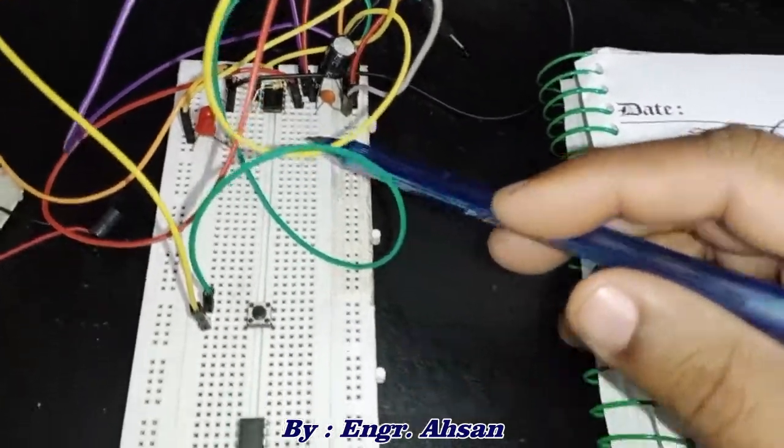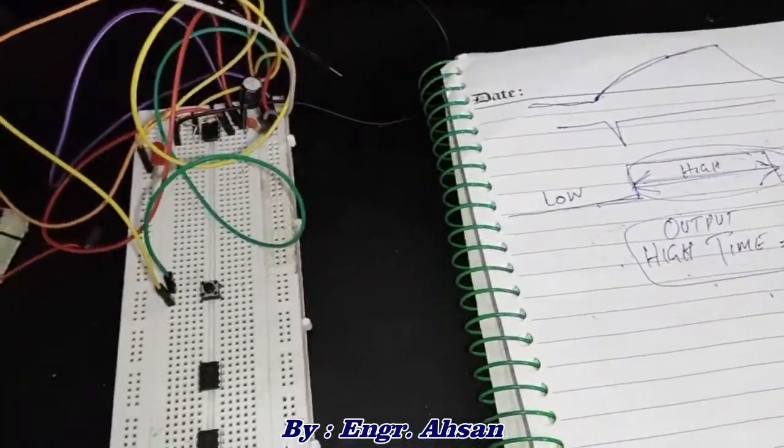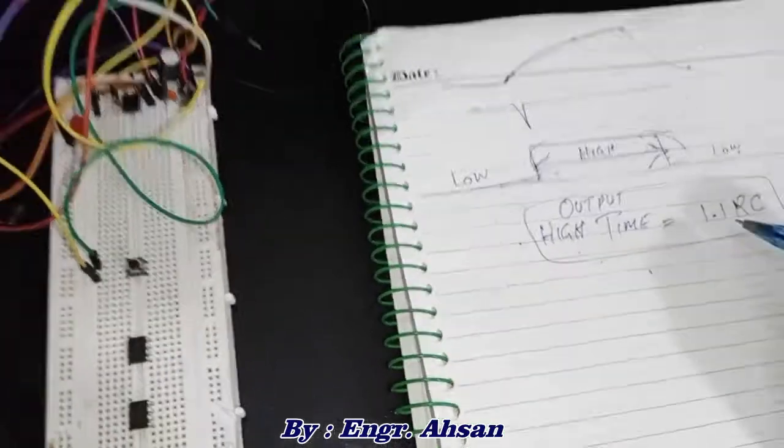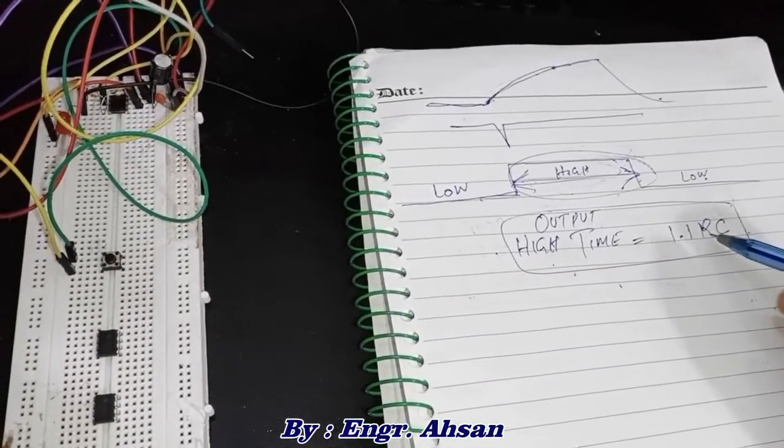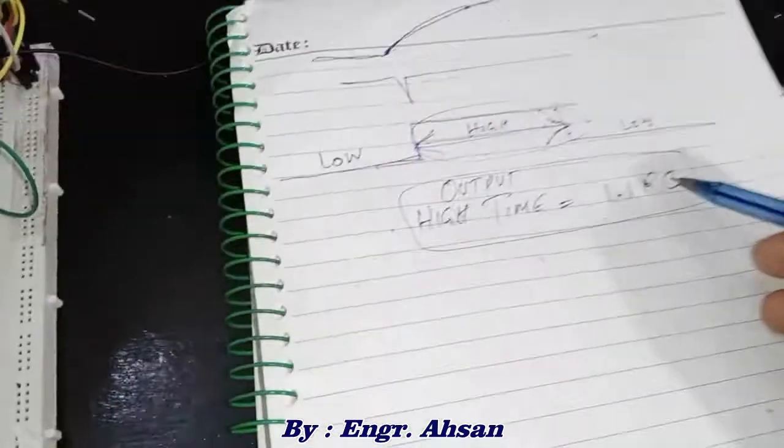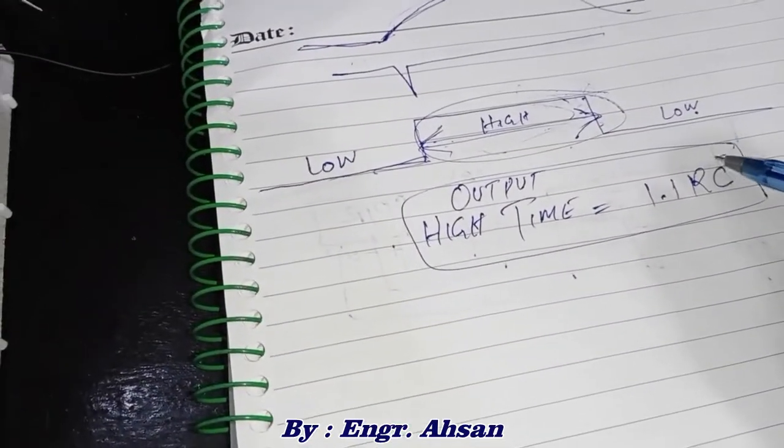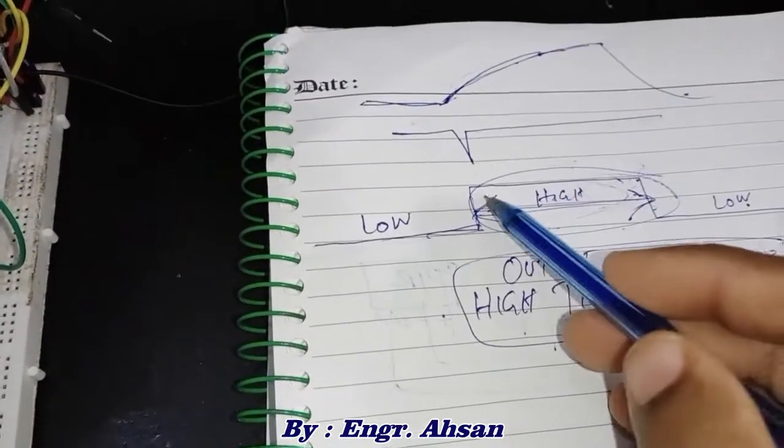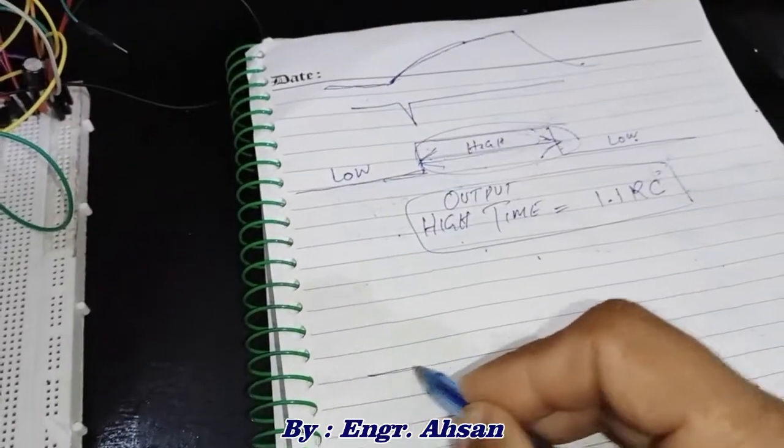This is the timer IC, as you can see it has eight pins. You can say that the high time is 1.1 times RC. If you increase the value of resistor and capacitor, you can increase this duration time.